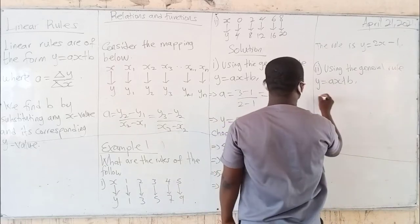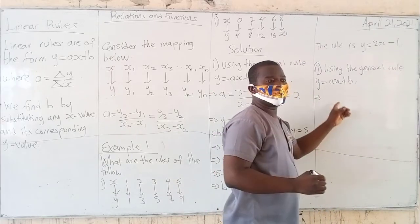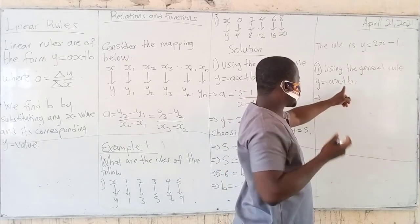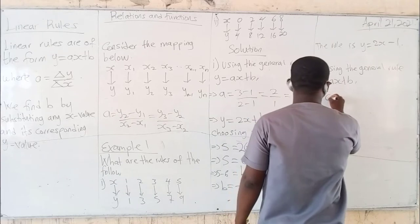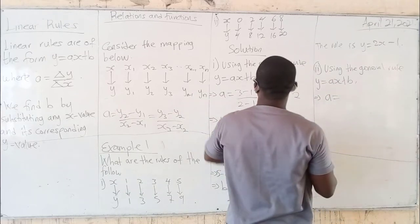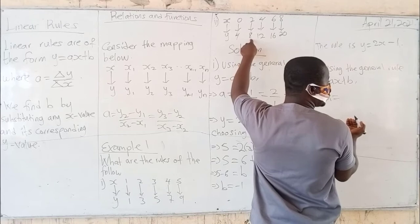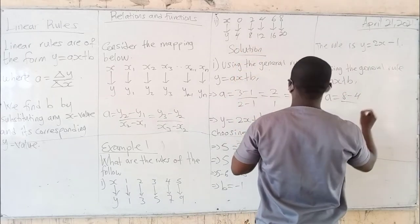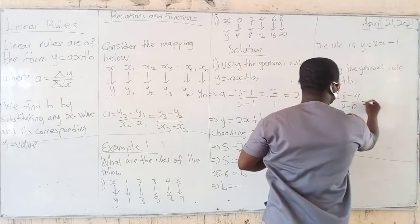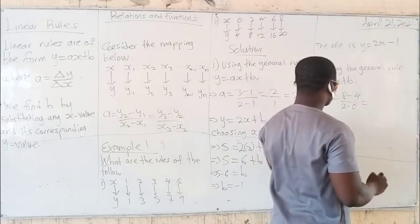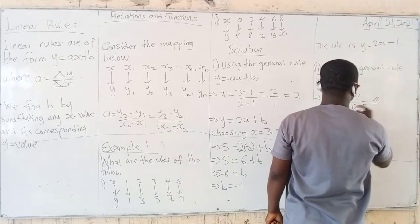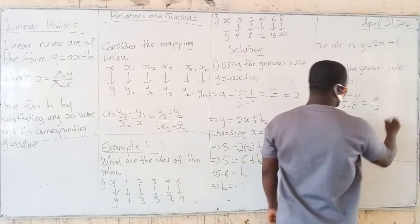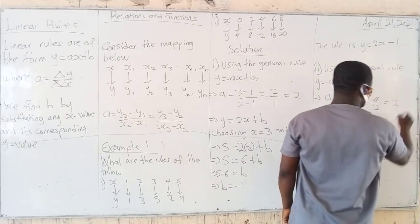Alright, what does that imply? Using Y is equal to AX plus B. And as usual, A is going to be equal to — let's choose this: 8 minus 4 over 2 minus 0. 8 minus 4 gives you 4, over 2 minus 0, and what do you get? You get 2.